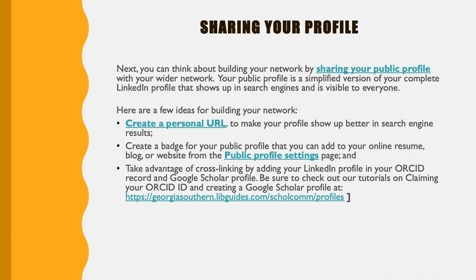A couple of ideas for building your network: create a personal URL, create a badge for your public profile, and take advantage of cross-linking by adding your LinkedIn profile in your ORCID record and your Google Scholar profile. Be sure to check out our tutorials on claiming your ORCID ID and creating a Google Scholar profile at this URL on our Scholarly Communications LibGuide.